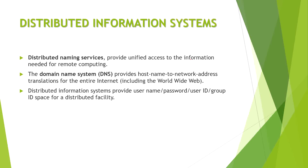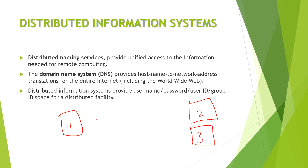Next we come to distributed information systems. These involve remote computer systems where files are stored. For example, computer one asks for a file across a network of computers that are remotely distributed. If the file is present on another computer — say computer two — that computer will fulfill the request. The basic question is: how does computer one know the file is present in computer two?